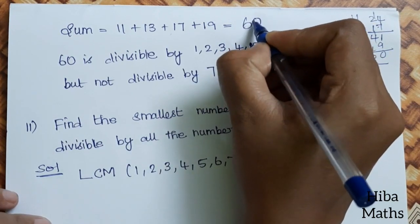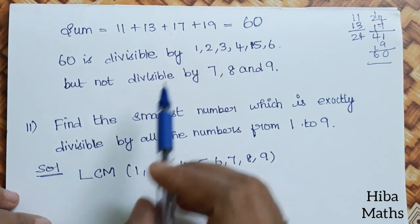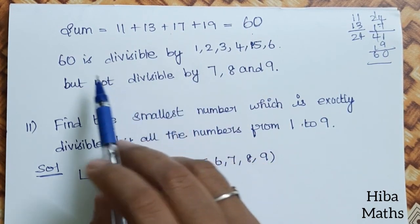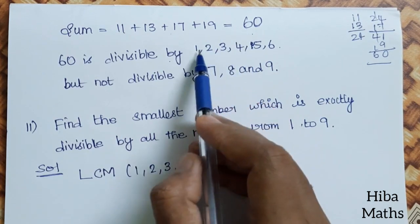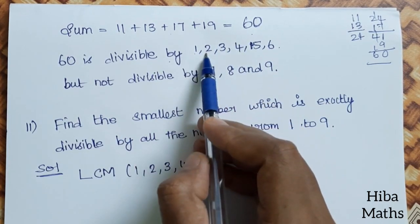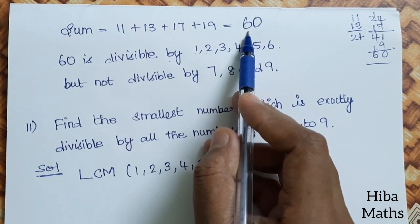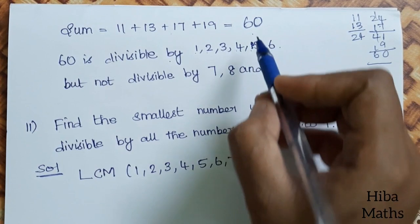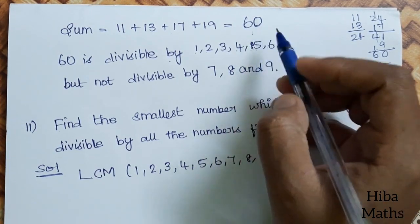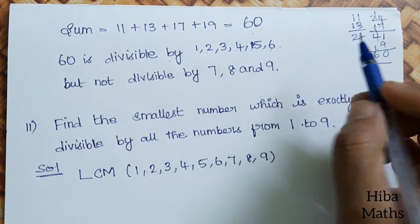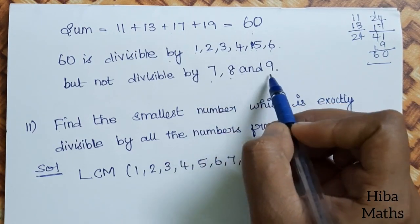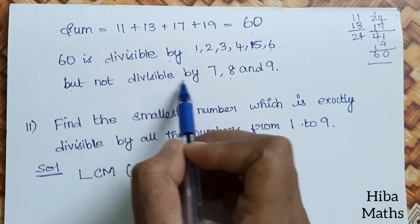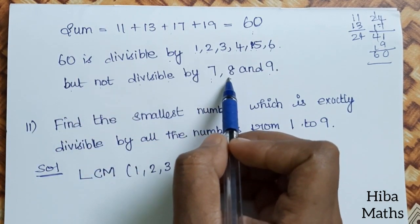So the answer is 60. Now the question is: how do you say 60 is divisible by single digit numbers? 60 divided by 1, 2, 3, 4, 5, 6 — all give whole numbers: 60, 30, 20, 15, 12, 10. But 60 is not divisible by 7, 8, and 9.